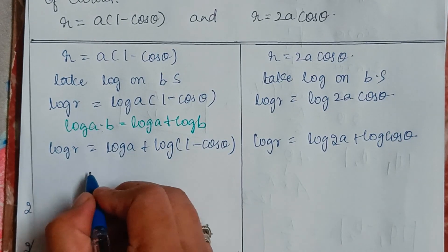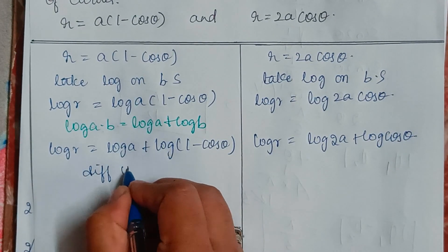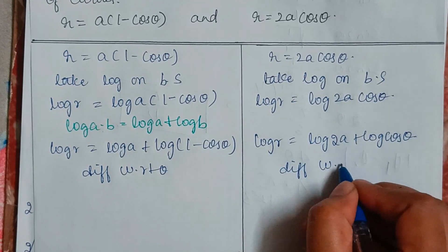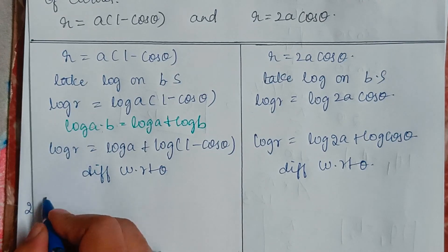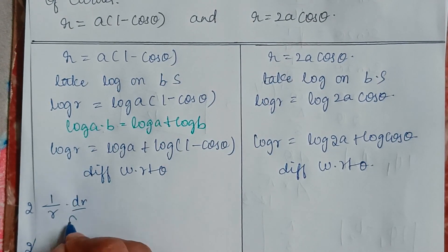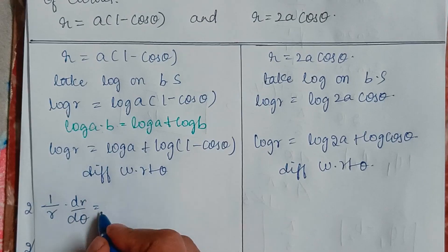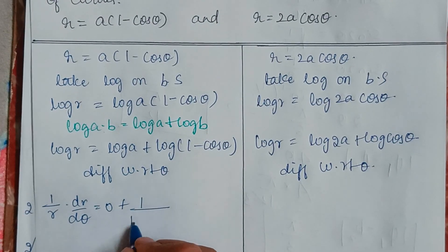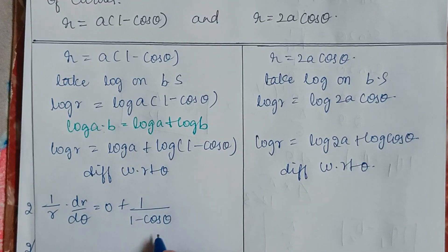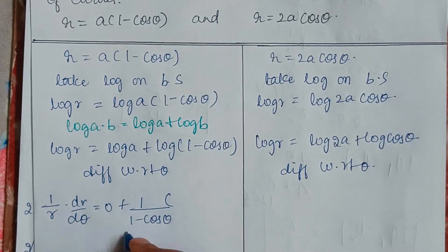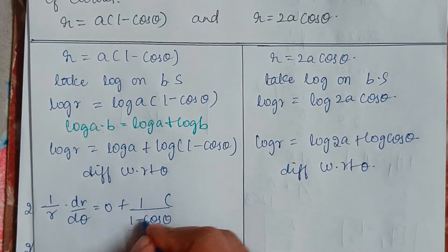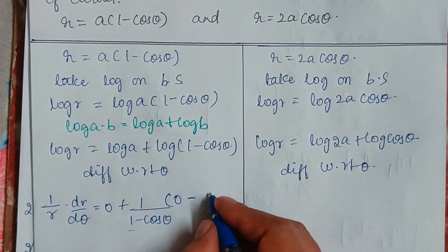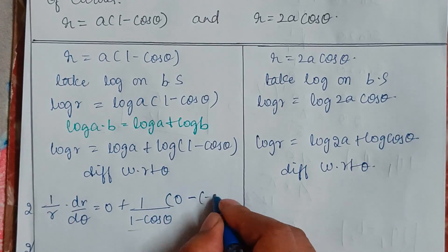Now we will differentiate both equations with respect to theta. For the first curve, this becomes 1 over R times dR/dθ equals 0 plus 1 divided by (1 minus cos theta), multiplied by the differentiation of (1 minus cos theta). The differentiation of 1 is 0, minus differentiation of cos theta, which is minus sine theta.